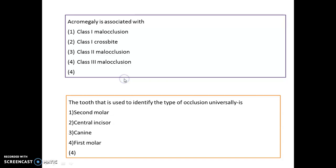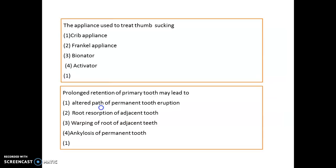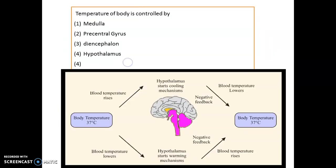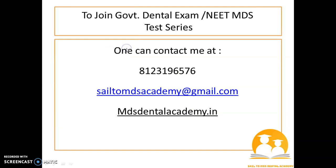In acromegaly, we see Class III molar occlusion, most often assessed using the first molar. The appliance used to treat thumb sucking is the crib appliance. Prolonged retention of primary teeth will alter the path of permanent tooth eruption. Body temperature is controlled by the hypothalamus.